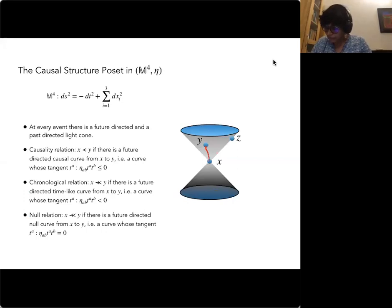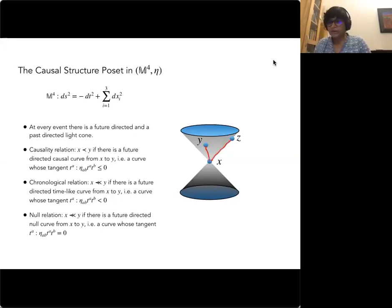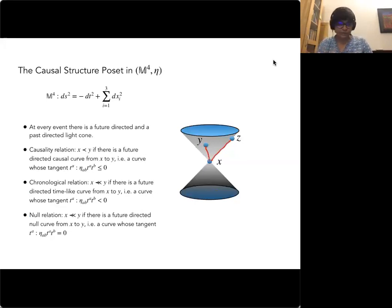When a point lies on the light cone, the norm of the tangent vector is zero — those are null vectors, and we call that a null-related element. A causal relation is one that's either null or chronological.